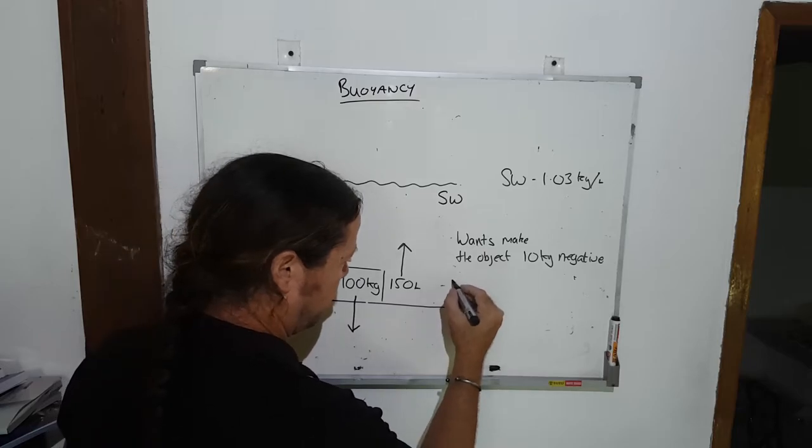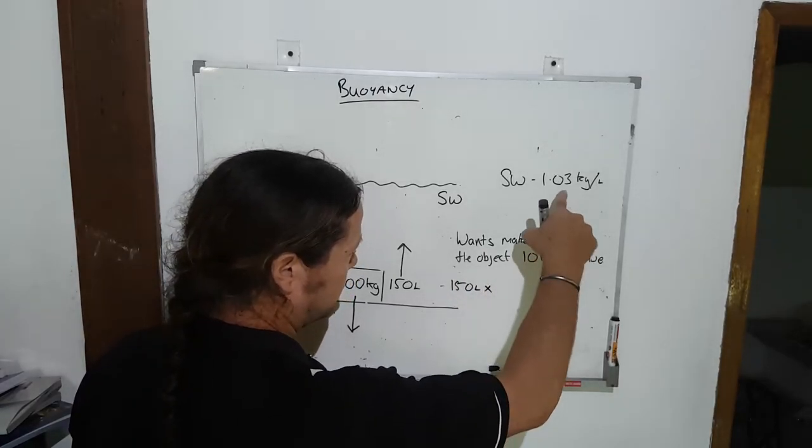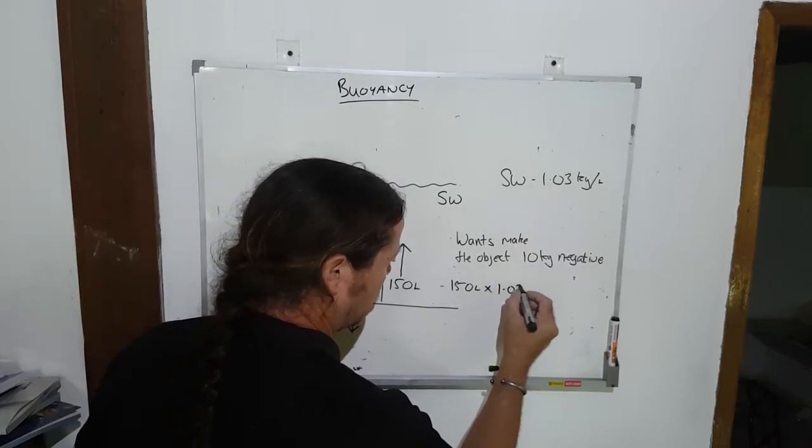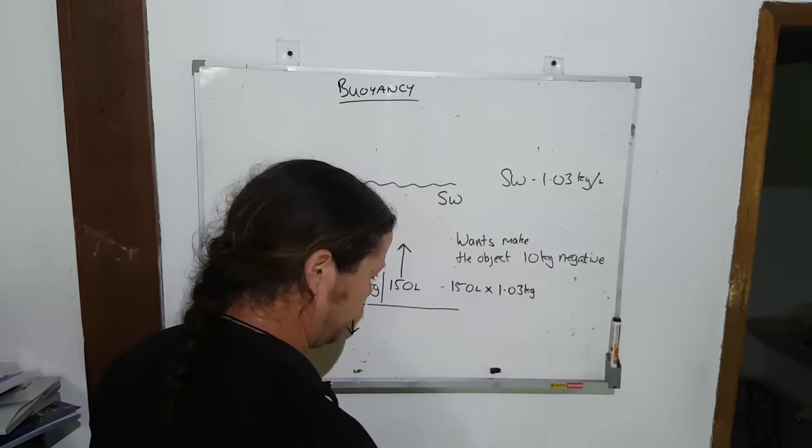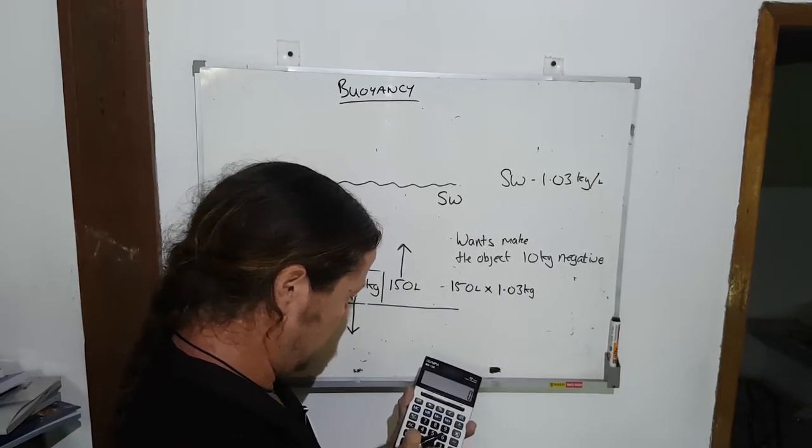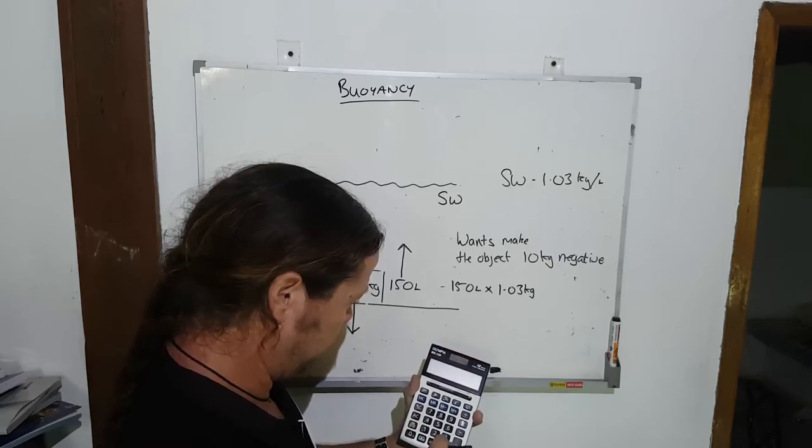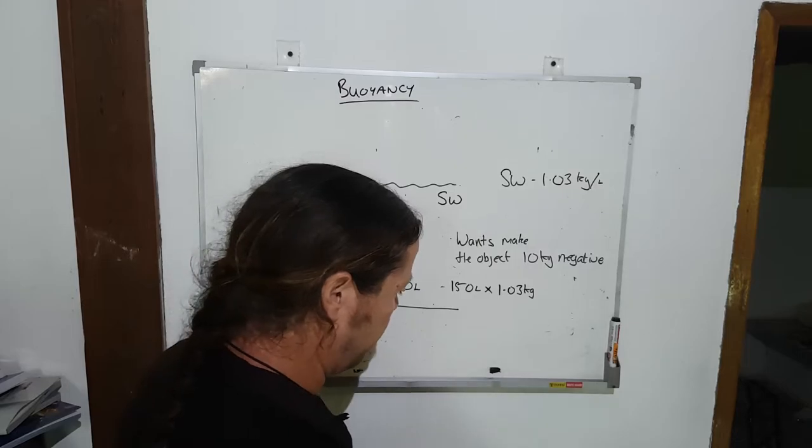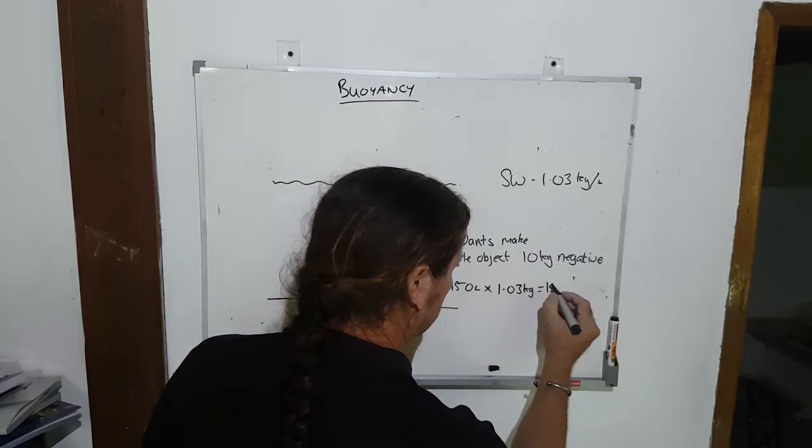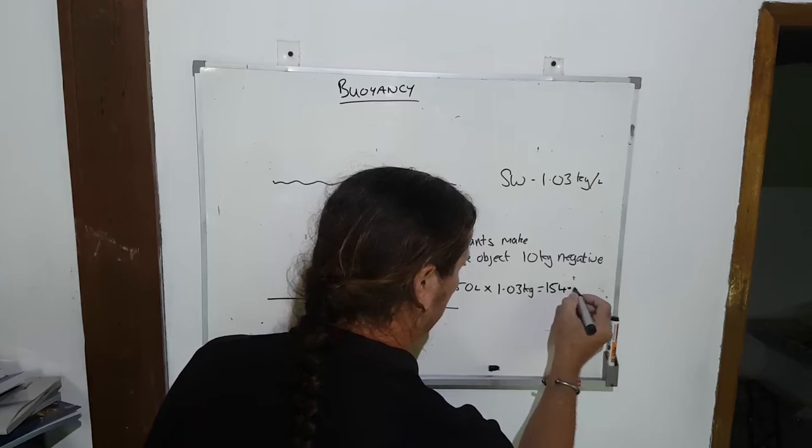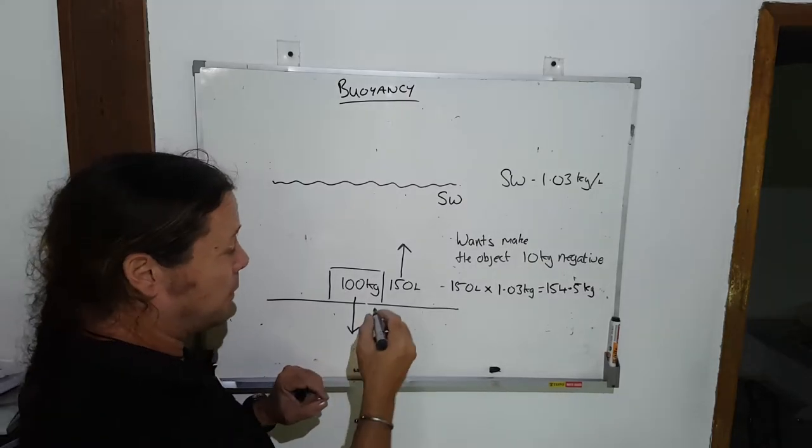So 150 liters times 1.03 kilograms for each liter here. 150 times 1.03 equals 154.5 kilograms. True to form, I'm going to take this number and put it here where it's important.